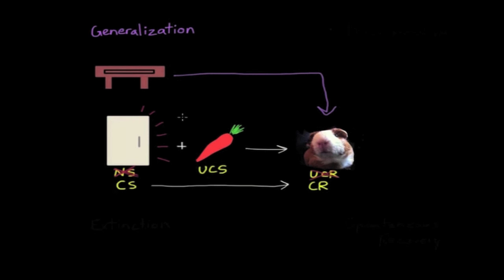For instance, you may know exactly what your best friend's smile looks like and their smile probably elicits feelings of joy in you. However, when it comes to meeting someone new for the first time, if you see them smile at you, it will probably also elicit feelings of joy. So that's the idea behind generalization.